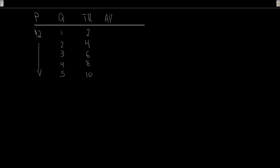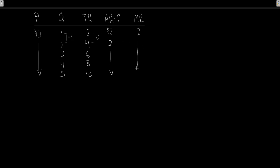Similarly, average revenue is total revenue divided by quantity — which gives us $2 throughout, confirming that average revenue equals price. For marginal revenue, a change in quantity of +1 gives a change in total revenue of +2, so 2 divided by 1 gives marginal revenue of 2. Again, marginal revenue equals price, just as we worked out previously.